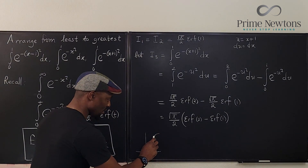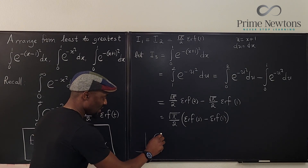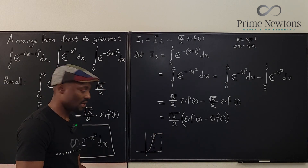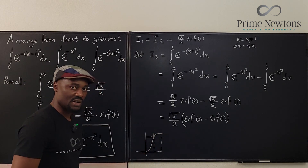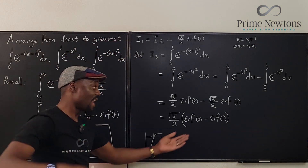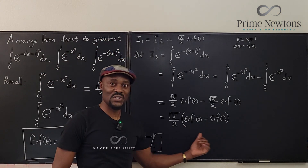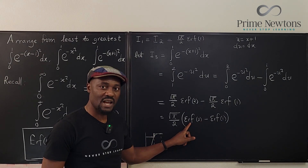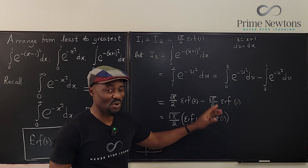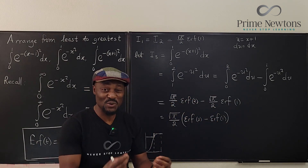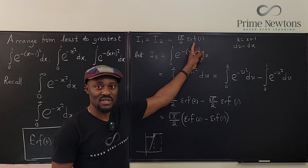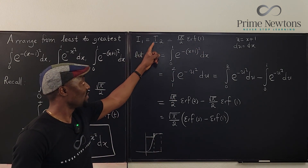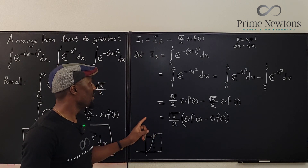Go back to the graph. The error function rises rapidly and then flattens out: at t equals one it's about 0.84, and at t equals two it's about 0.995. The difference between erf(2) and erf(1) is tiny compared to the value of erf(1) itself, because of the shape of the graph. So I3 is much smaller than I1 or I2. The conclusion is: I1 equals I2, and both are greater than I3.